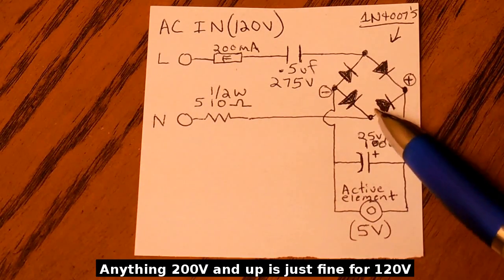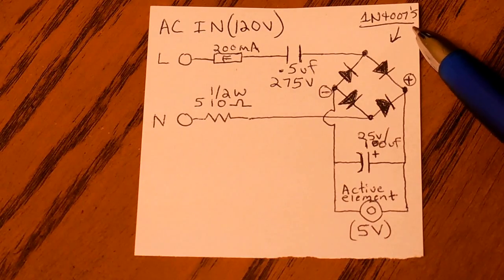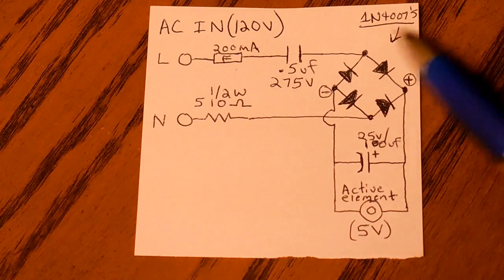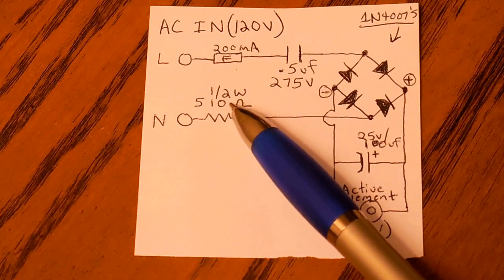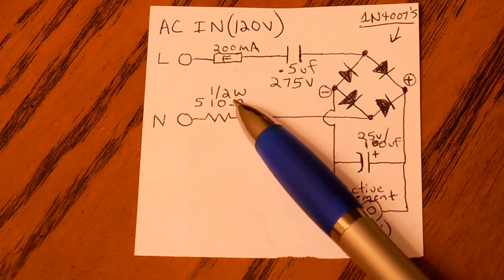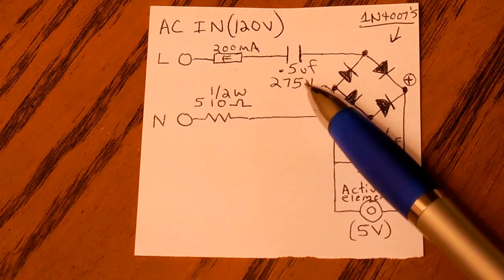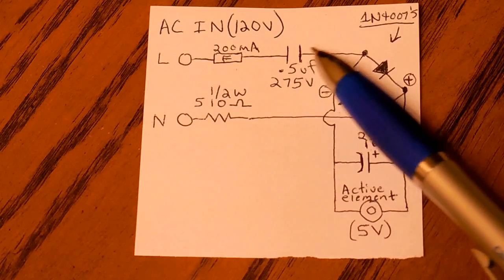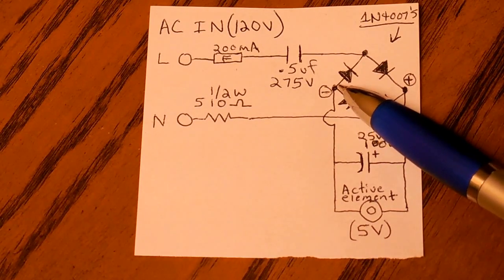From there, it goes into a bridge rectifier, which you can make out of four 1N4007 diodes. The neutral side has a 510 ohm resistor, and that's rated at a half of a watt. This limits the inrush, and the 0.5 microfarad capacitor reduces the current flow to the entire circuit.